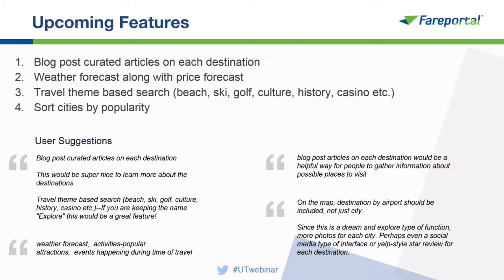Upcoming features for the Explore tool include blog posts and curated articles for each destination, weather forecast along with price forecast, so users can see not only the cheapest month of the year but also what the weather looks like. We're working to introduce theme-based search like beach, ski, golf, and culture, and sorting cities by popularity from the origin. User suggestions aligned with what we had envisioned, which was a great way to validate our roadmap.